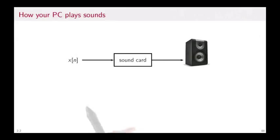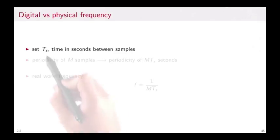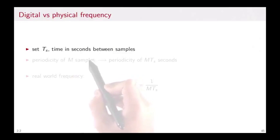If you have a PC that plays sound, you have to map digital frequency, or a discrete time signal x[n], through a sound card into a loudspeaker. There has to be a relationship between the clock frequency on your computer that maps into a physical frequency out in the real world. This is given by the system clock. The sound card has a clock, Ts, and every Ts seconds, it will generate a sample that will be interpolated and fed to the loudspeaker. Periodicity of m samples means a physical periodicity of m times Ts seconds. So the real world frequency is f = 1/(m × Ts).